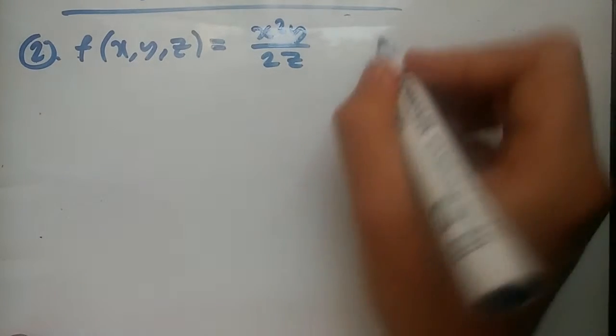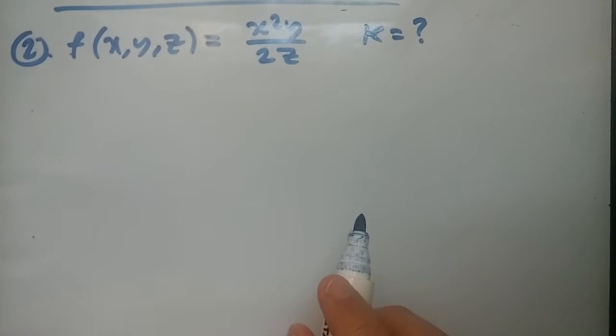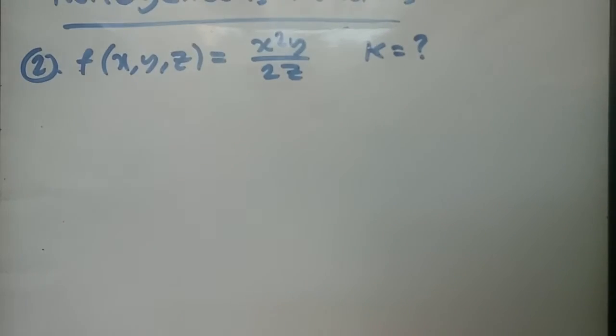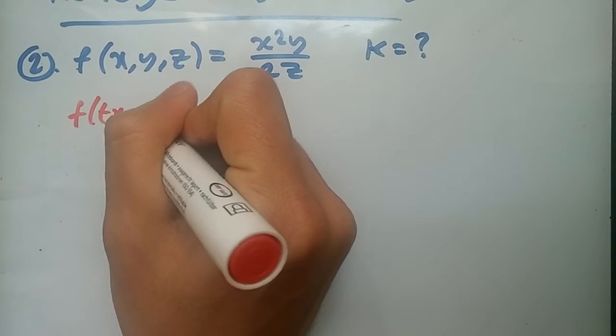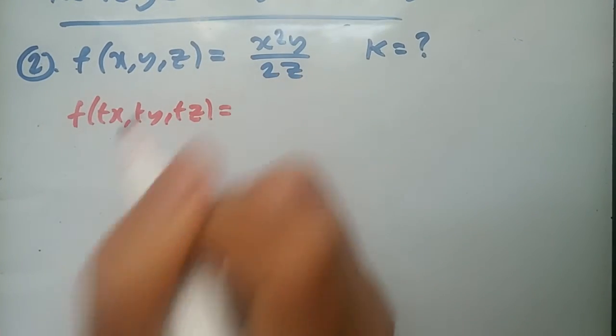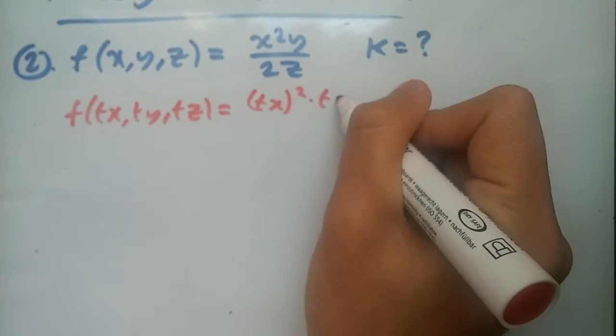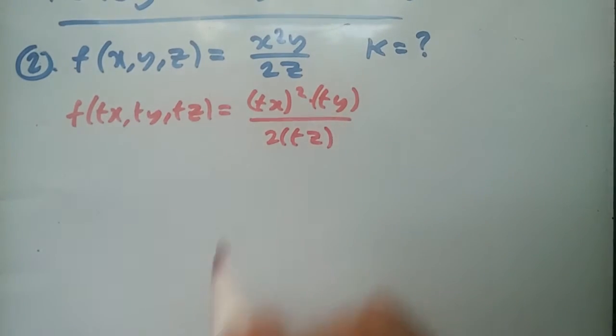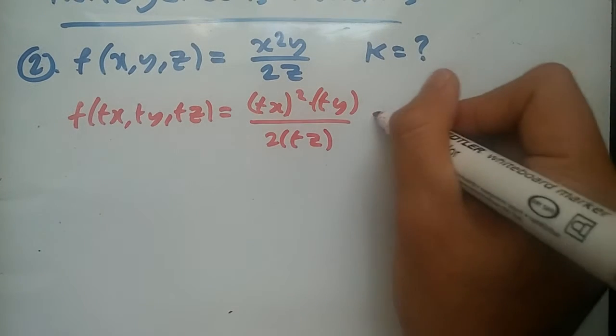So once again, I'm checking what the value of k is. So this would be the degree of homogeneity. So replacing all variables with tx, ty, tz, my solution pen is always going to be red. So we should have function f(tx, ty, tz) equal to tx all squared times ty over 2 times tz. It really helps to use a bracket just in case you screw up somehow.